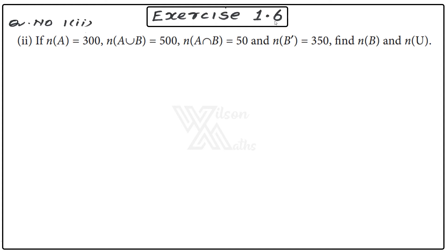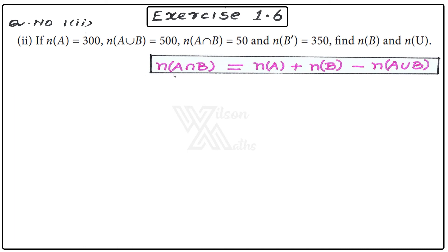Exercise 1.6, Question number 1, Subdivision 2. If n(A) = 300, n(A∪B) = 500, n(A∩B) = 50. Find n(B) and n(U). First, write the formula: n(A∪B) = n(A) + n(B) − n(A∩B).